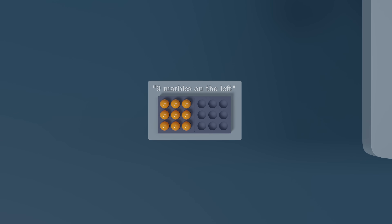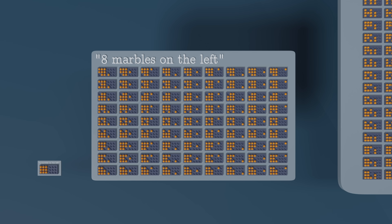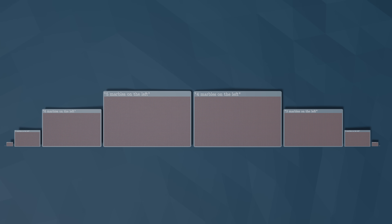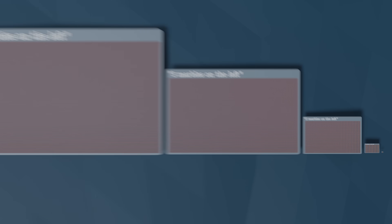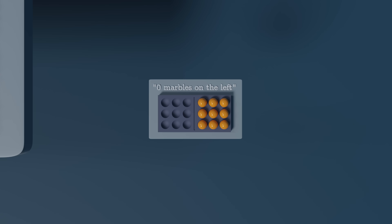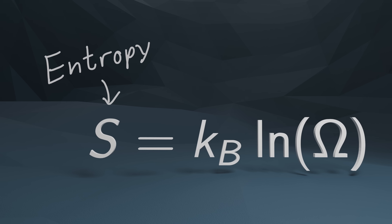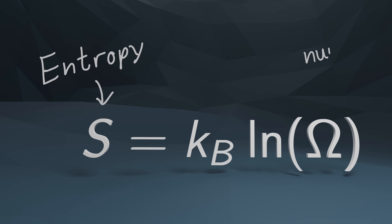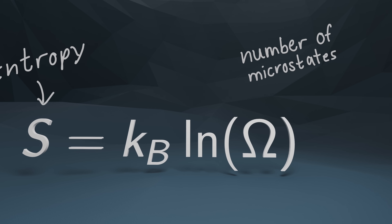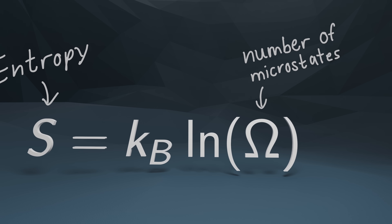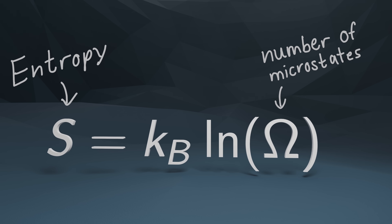From all nine marbles on the left, over eight marbles on the left, and so on, all the way to no marbles on the left. Now, entropy measures how many microstates belong to a macrostate.